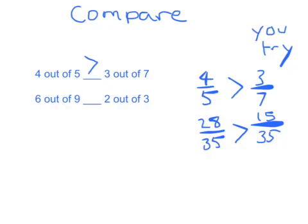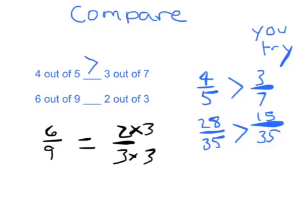For the other one here, we've got 6 ninths, we've got 2 thirds, and we actually know that those two are equal to each other. We can get that common denominator of 9, so we'll put an equal sign there.